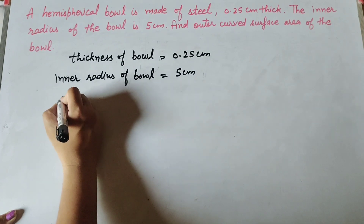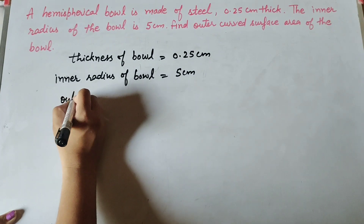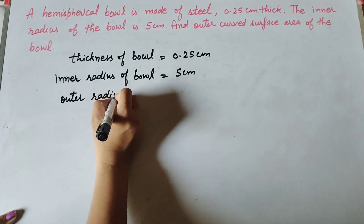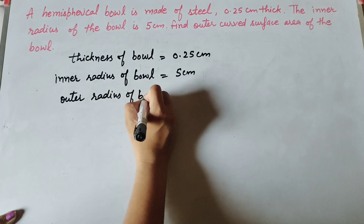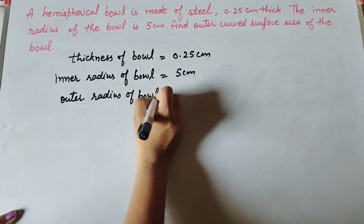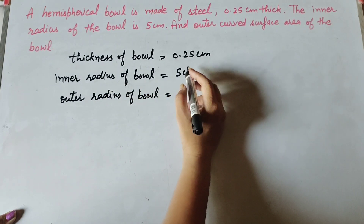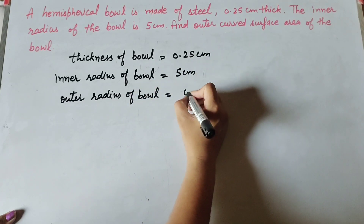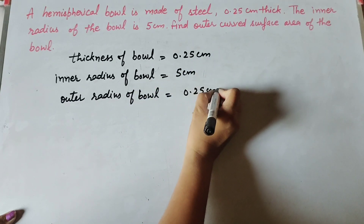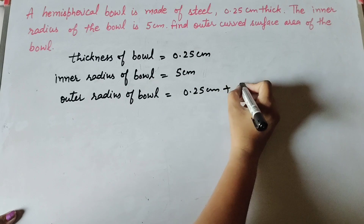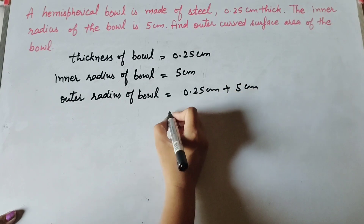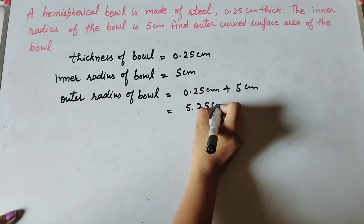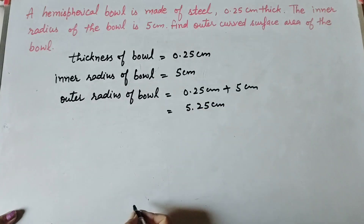To find the outer curved surface area, we first need to find the outer radius of the bowl. Outer radius = inner radius + thickness = 5 centimeter + 0.25 centimeter = 5.25 centimeter.